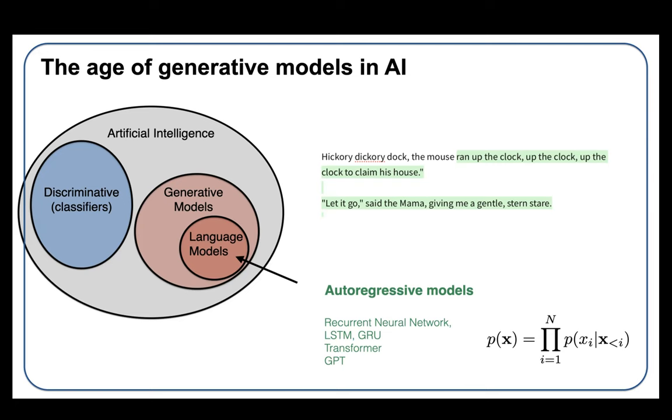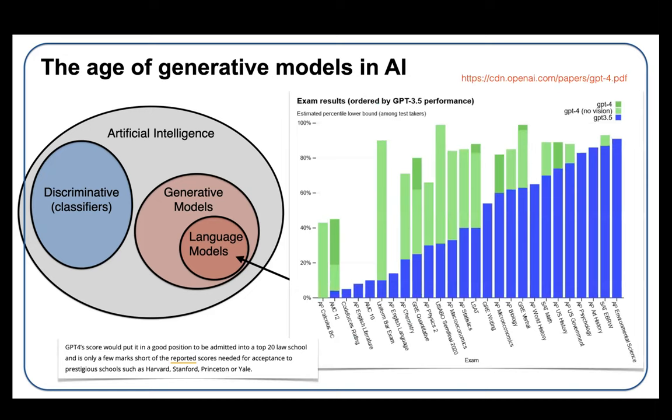They've become much more sophisticated than hickory dickory dog. This is from the GPT-4 paper - blue is GPT-3.5, green is GPT-4. You see a huge emergence in accuracy between these two versions of GPT for a whole bunch of standard tests. GPT-4 is doing much better than I would do on US history, writing and so on. In fact, it looks like based on these scores, GPT-4 could get into Harvard law or something like that. It's remarkable, there's no doubt about it.